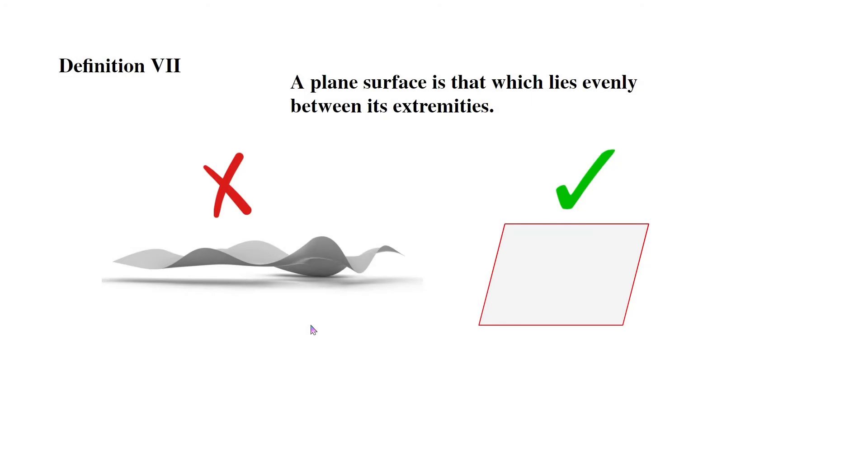Definition 7: A plain surface is that which lies evenly between its extremities. Now this is very similar to the straight line definition. You know, a straight line lies evenly between its extremities. This is kind of the same thing, but we're talking about a different dimensional figure now.